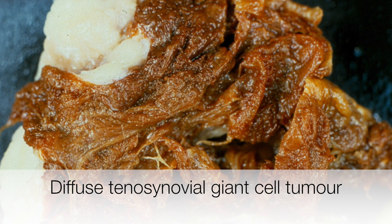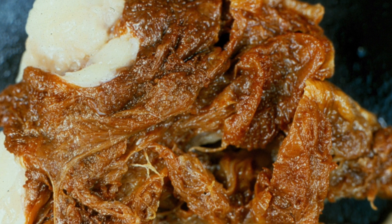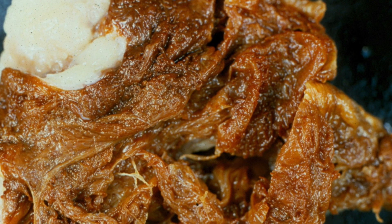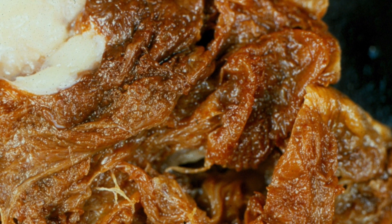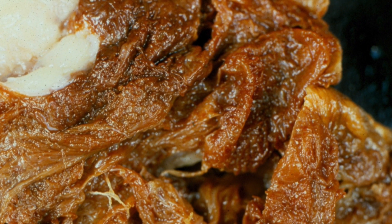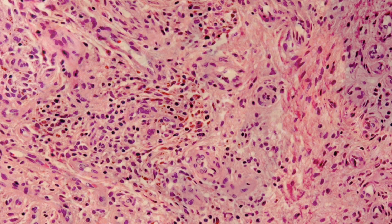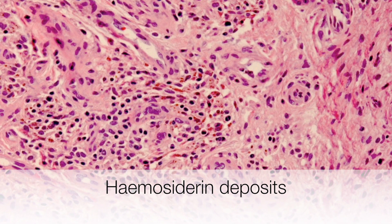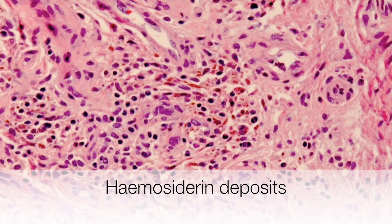This is the gross appearance of diffuse tenosynovial giant cell tumour, and you can see why it is also known as pigmented villonodular synovitis — it is pigmented, it is villous, and also nodular. In this area of the tumour, towards the centre of the picture, there are golden brown pigmented deposits, and this is haemosiderin.